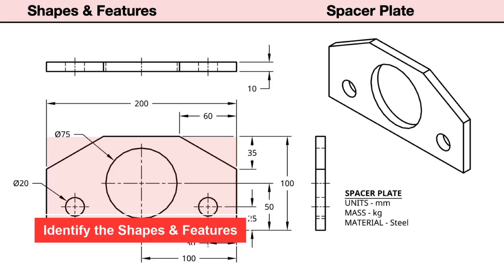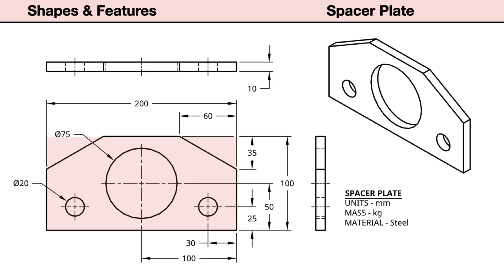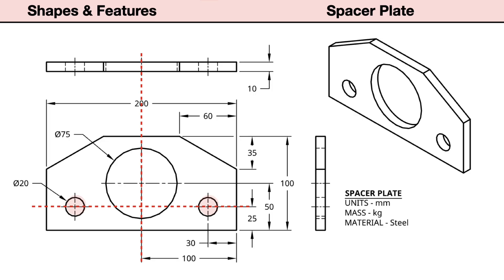When preparing to make a feature-based model, we need to identify the basic shapes and features. The front view shows a rectangular shape. The top corners are cut at an angle, forming a chamfer, and the edges in the top view and right side view show the material thickness is the same throughout the part. The front view shows a circular hole centered on the plate, and hidden lines in the top and right side view show this hole goes through the plate. The front view also shows two equally sized smaller holes, and the other views show these holes also go through the plate.